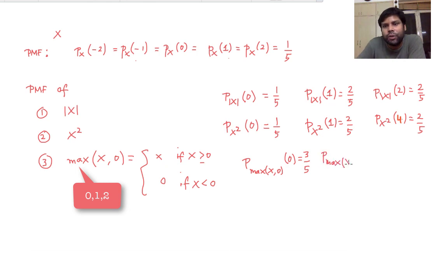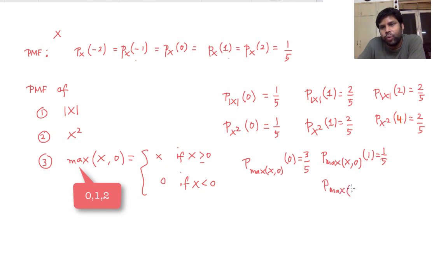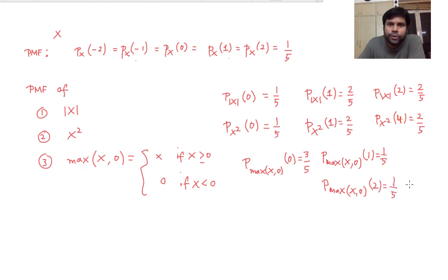The probability that max(X, 0) takes value 1 is 1 by 5, because whenever X equals 1 then max(X, 0) equals 1. And finally, the probability that max(X, 0) equals 2 is also 1 by 5. Thank you.